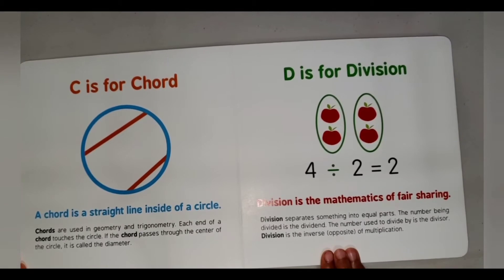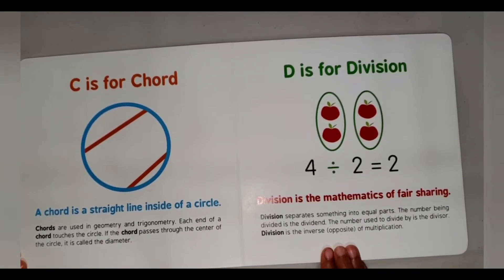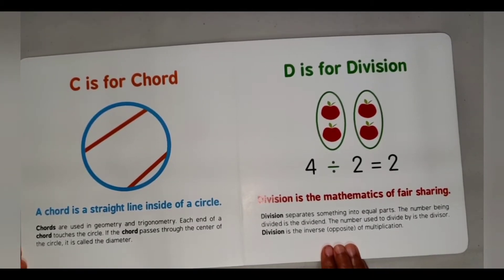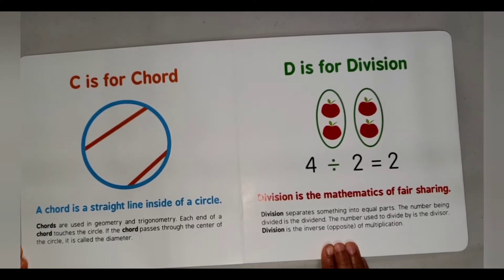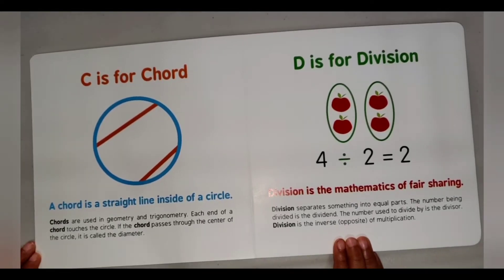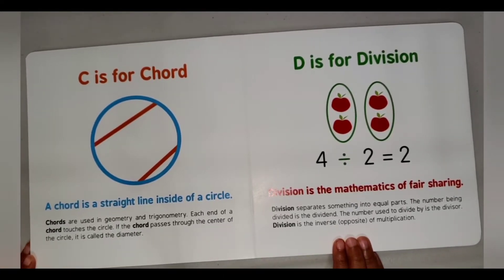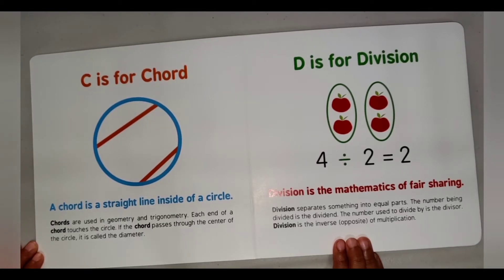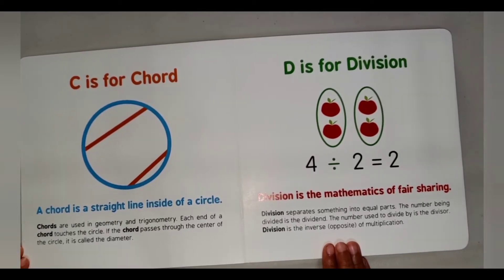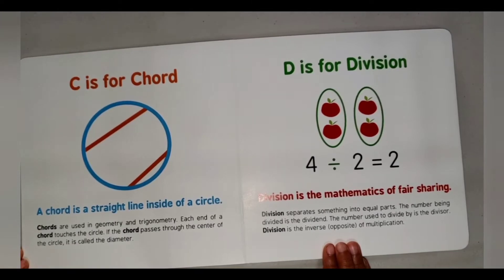C is for Chord. A chord is a straight line inside of a circle. Chords are used in geometry and trigonometry. Each end of a chord touches the circle. If the chord passes through the center of the circle, it's called the diameter.